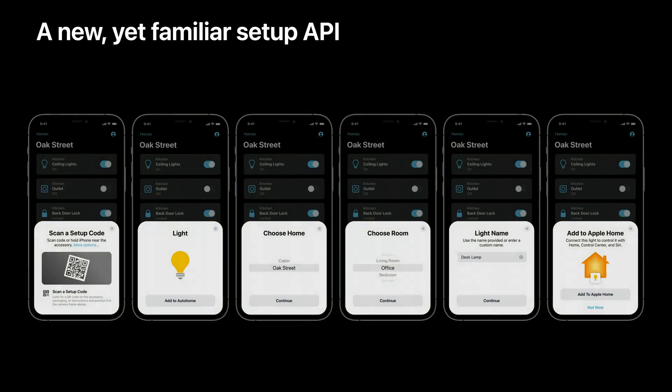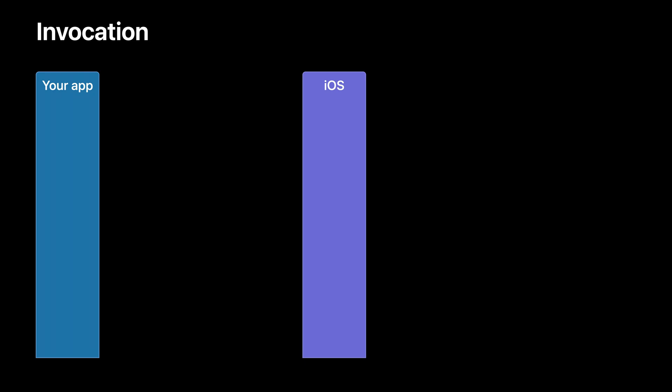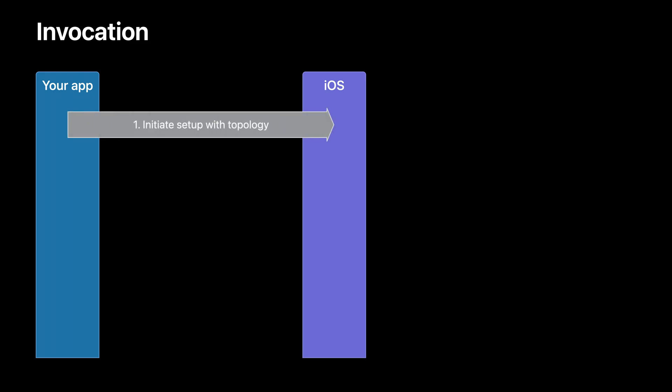As you can see here, this flow strongly resembles how we set up both Apple products and HomeKit accessories today. We know our customers are familiar with this flow. It is important to note that while this is system UI, the homes and rooms the user selects from are vended from your app. Your app is responsible for completing required operations and providing requested information to setup via a new app extension type. Before beginning setup, your app creates a topology object representing the homes it manages, and then passes this topology object to a new setup API. At this point, setup is launched and ready to scan a Matter QR code.